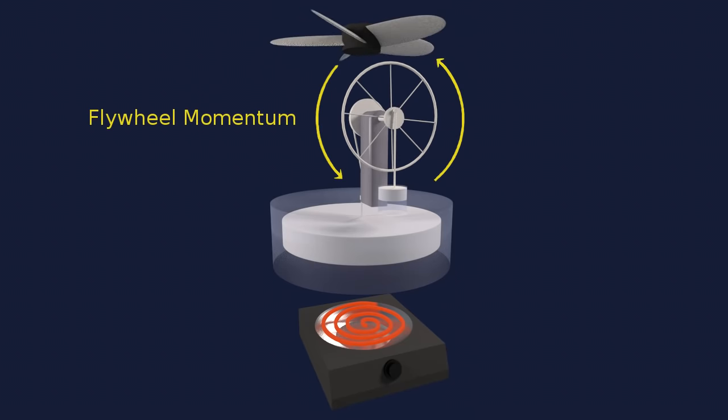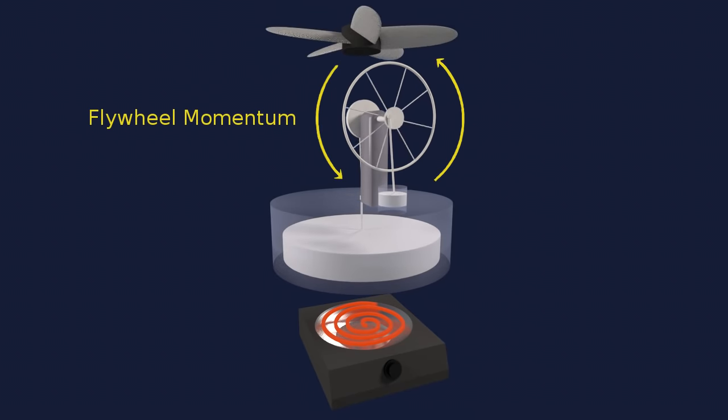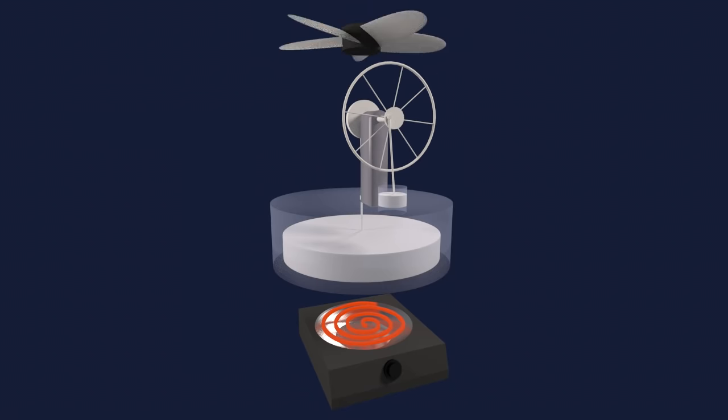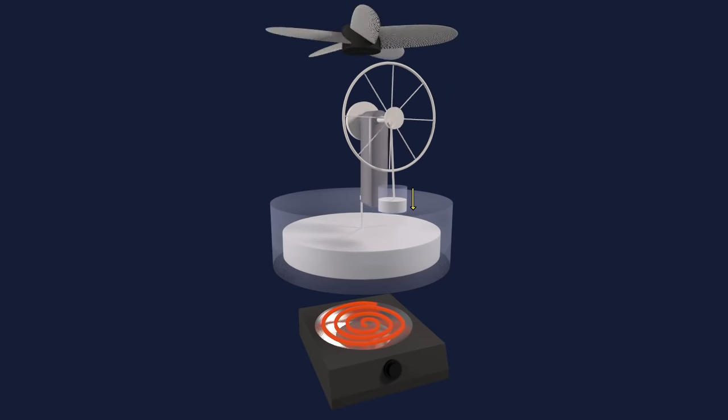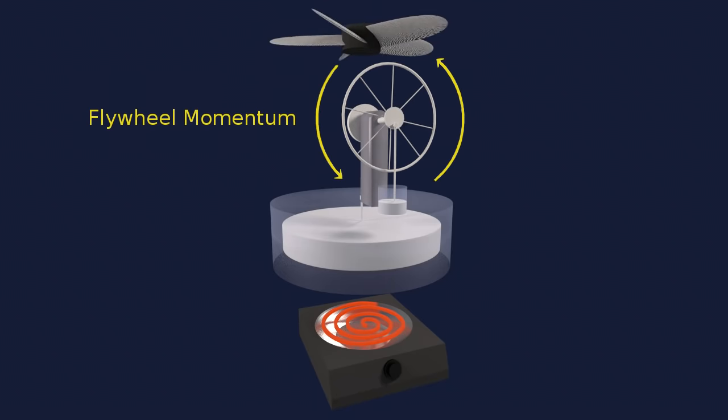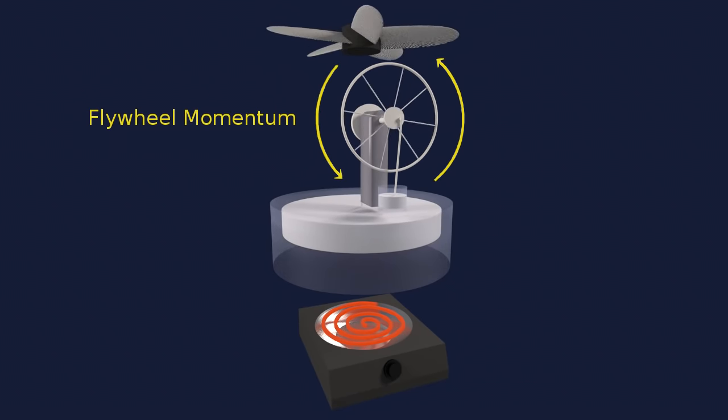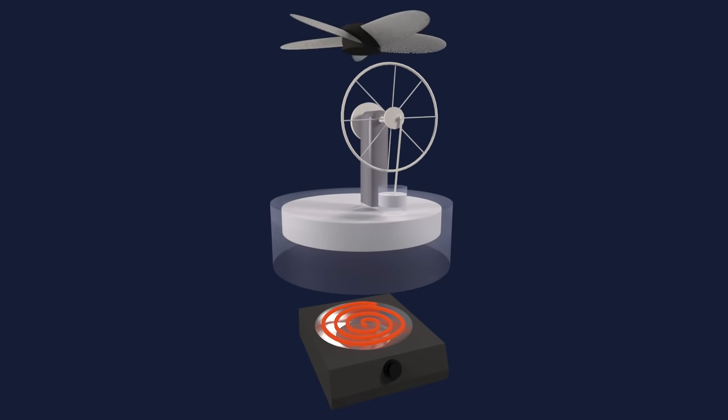As the piston reaches the top, the flywheel momentum moves the piston back to the halfway point. Now the displacer is at the bottom and the air is on the cool side at the top of the cylinder, so the piston will be pulled down. As the piston reaches the bottom, the flywheel momentum again moves the piston to the halfway point and the cycle begins again.